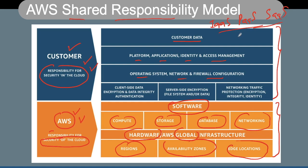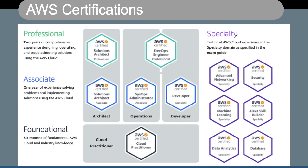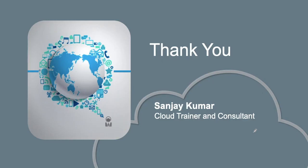AWS has various certifications available. At the foundational level there is the AWS Certified Cloud Practitioner. At the associate level there are three certifications: AWS Certified Solutions Architect, SysOps Administrator, and AWS Developer. There are two professional-level certifications: Solutions Architect Professional and DevOps Engineer Professional. There are also specialty certifications in advanced networking, security, machine learning, Alexa Skill Builder, data analytics, and databases.